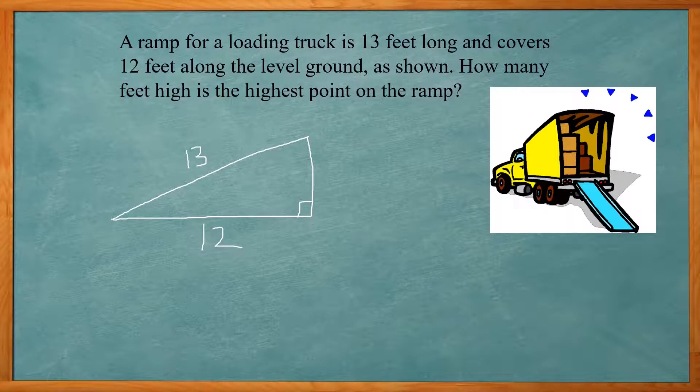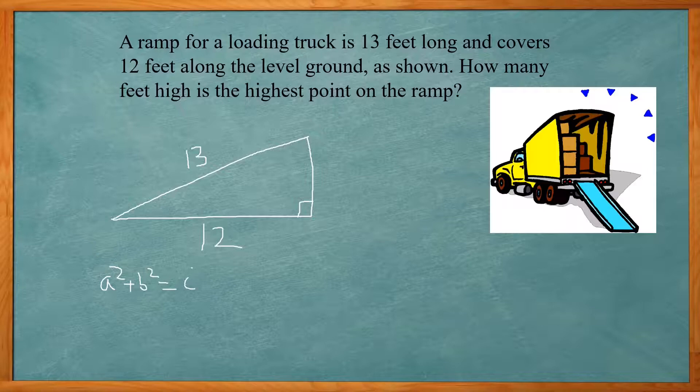We got 13 as hypotenuse and 12 as one of the legs. If you memorize your common ratios for the Pythagorean theorem, right away you know the other side has to be 5. But if you didn't know, you just fill out your Pythagorean theorem where you have a squared plus b squared equals c squared. Our c is going to be 13, so 13 squared, and then fill in one of the legs for 12 squared.